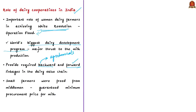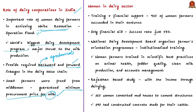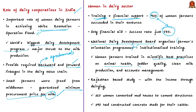A recent study indicated that 93% of women farmers who received training alongside financial support succeeded in their ventures, compared to only 57% who received financial aid alone. This demonstrates the importance of the National Dairy Development Board, which organizes farmers' orientation programs across the country after recognizing the need for institutionalized training. Women farmers are trained in scientific best practices on animal health, fodder quality, clean milk production, and accounts management. The National Dairy Development Board has been constituted as a body corporate and declared an institute of national importance by an act of Parliament.